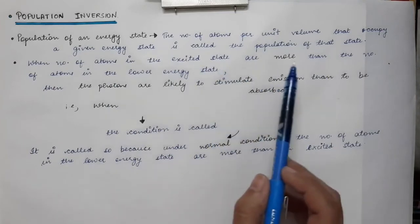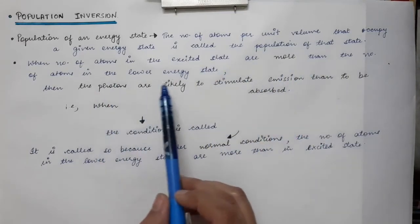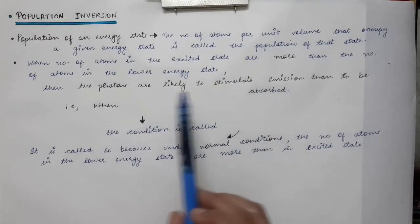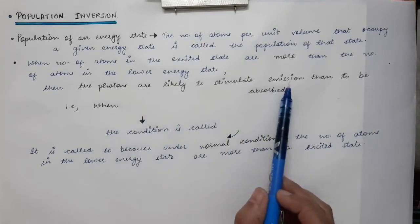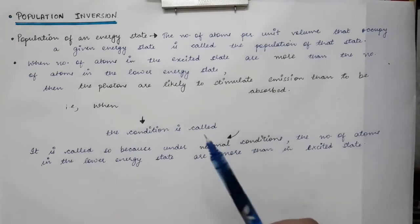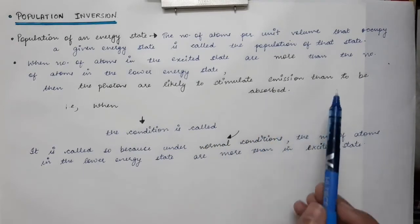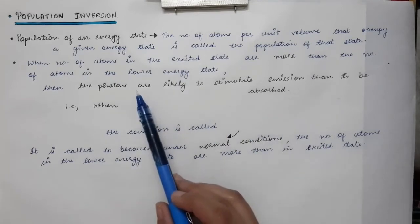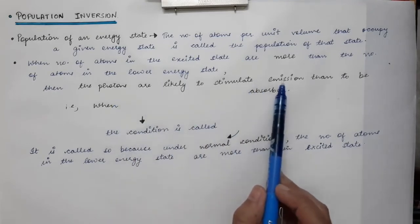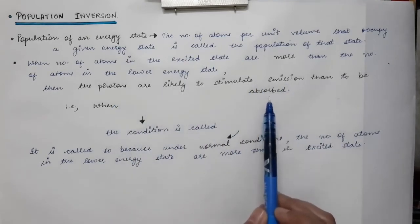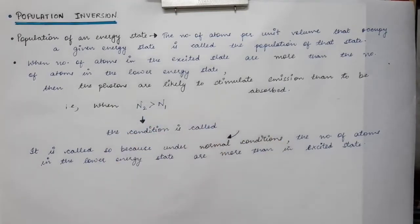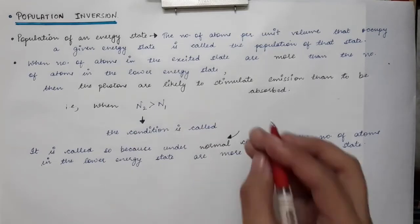When n2 is greater than n1, the number of atoms in the excited state is more than in the lower energy state, meaning photons are more likely to stimulate emission than to be absorbed. So the rate of stimulated emission increases compared to stimulated absorption. This condition, when n2 is greater than n1, is called population inversion.